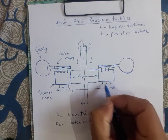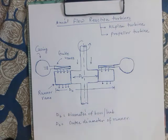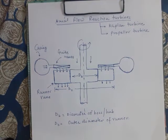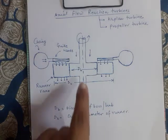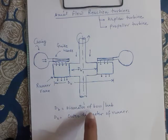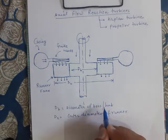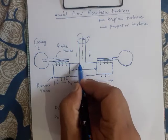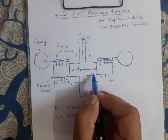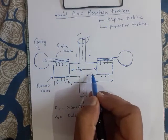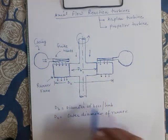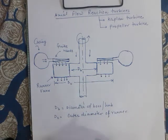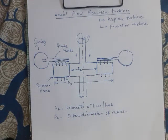For numerical problems involving the Kaplan turbine, some key parameters are important. db is the diameter of the boss or hub — this is part of the shaft itself. d0 is the outer diameter of the rotor or runner.